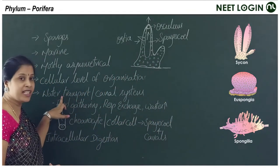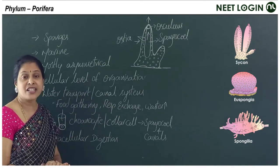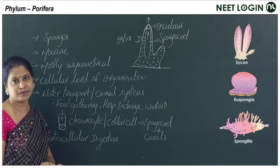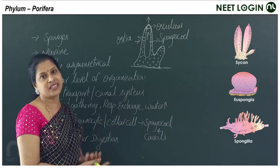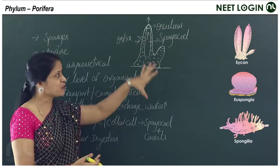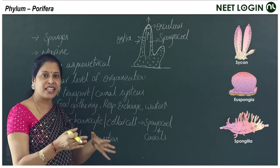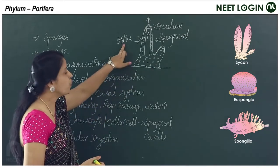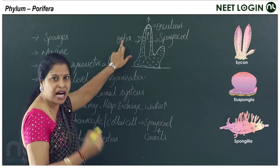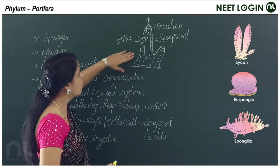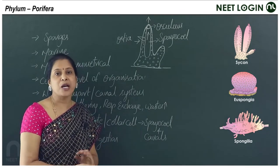The unique feature of poriferans is the water transport or canal system. You can see different types of sponges with their porous nature. The canal system includes ostia — inhalant apertures through which water enters — and several minute pores are present on the body surface.